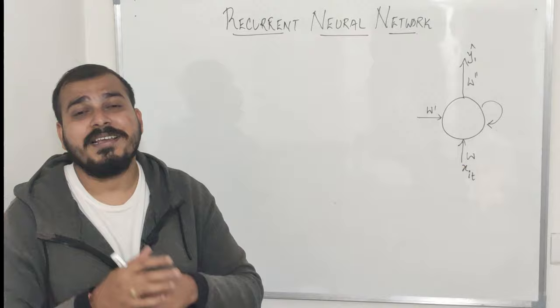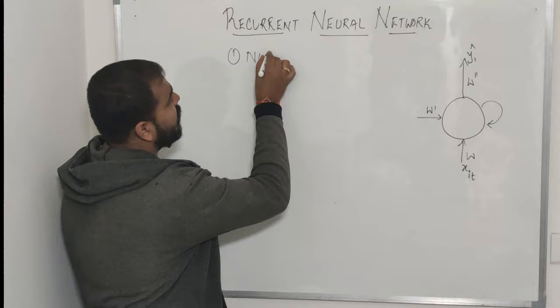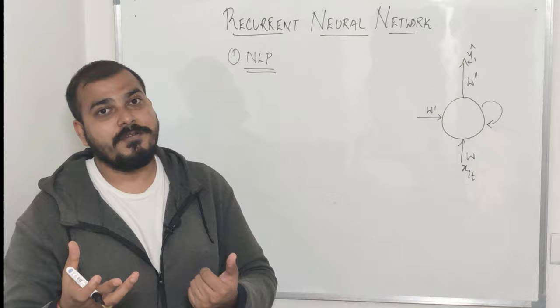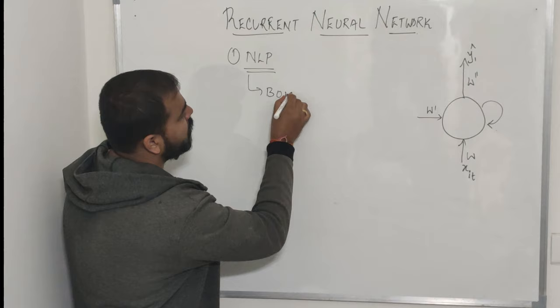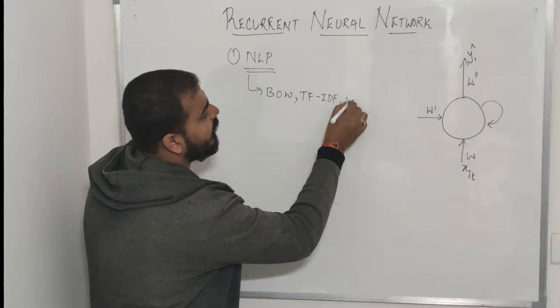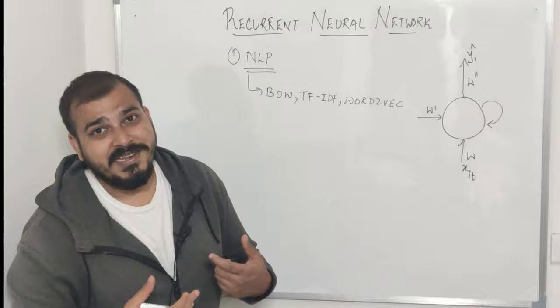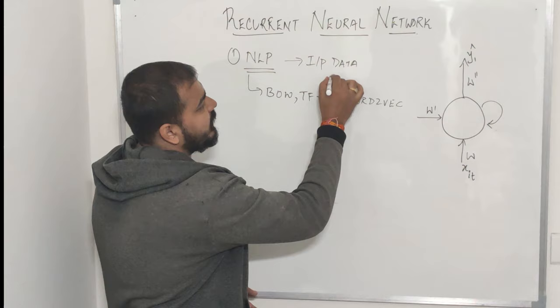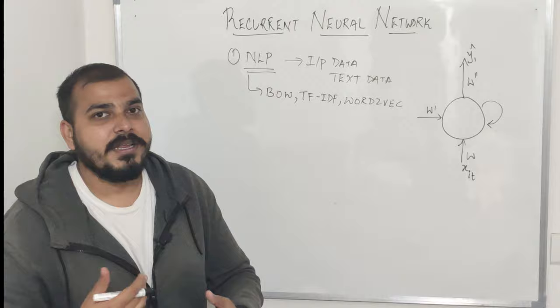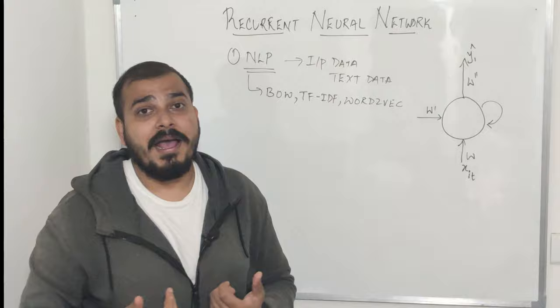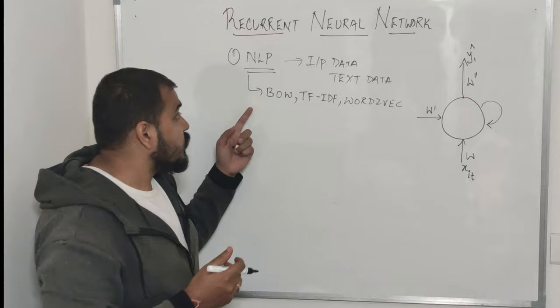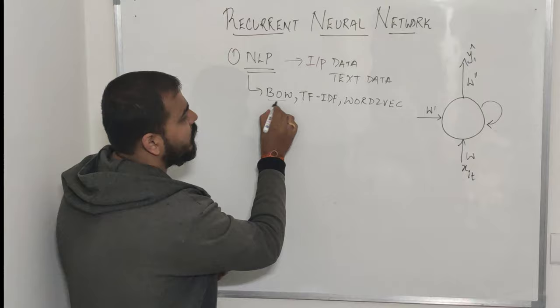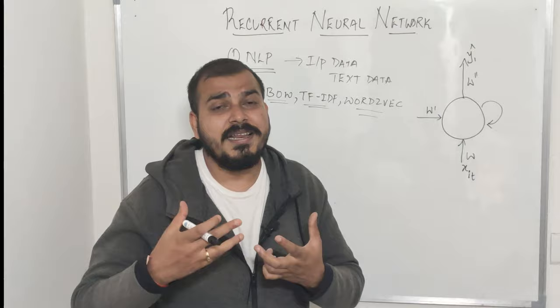Let's understand why exactly RNN. If I take an example of NLP - natural language processing - until now in machine learning, I've already uploaded videos regarding NLP. In machine learning we use techniques like bag of words, TF-IDF, word2vec, and various other techniques. In word2vec we have libraries like Gensim. Now understand that in NLP, my input data is basically text data. Suppose I am doing a spam classifier - based on this text it should be able to derive whether this is spam or ham.